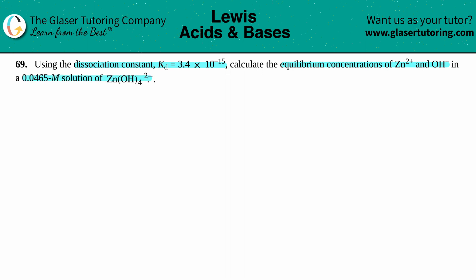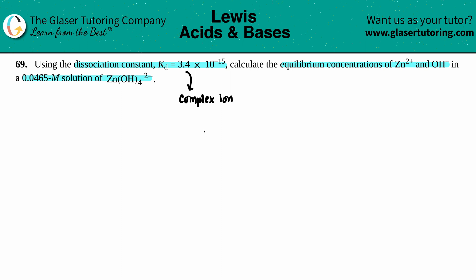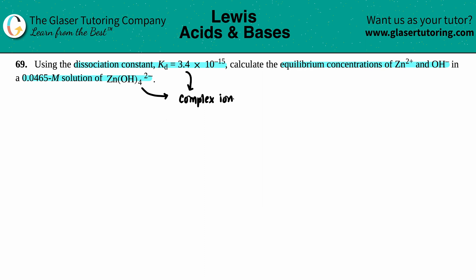When working with dissociation constants — specifically Kd — we're talking about a complex ion. A complex ion is basically when a metal comes together with a polyatomic — sometimes it's ammonia, but generally it's a metal combining with a polyatomic to make one big ion with a charge. In this case it's Zn(OH)₄²⁻. With Kd, dissociation means the complex ion breaks down — we are not forming it, we are breaking it down.